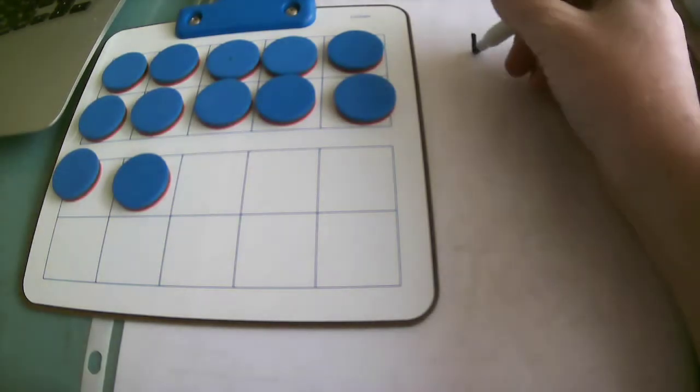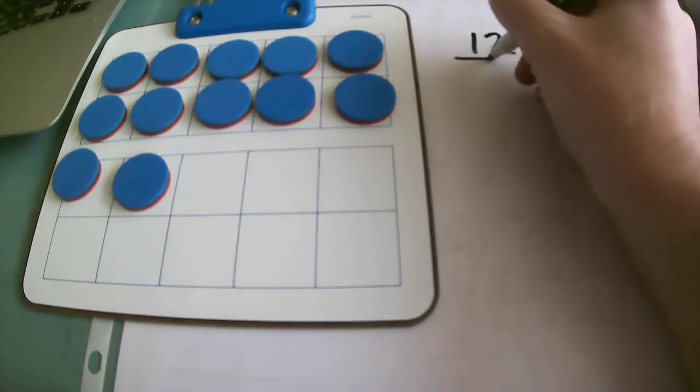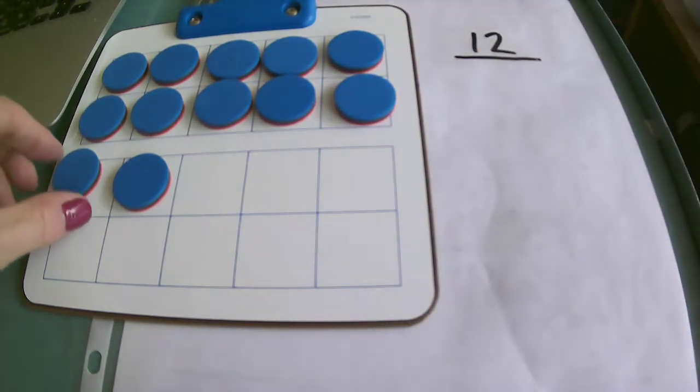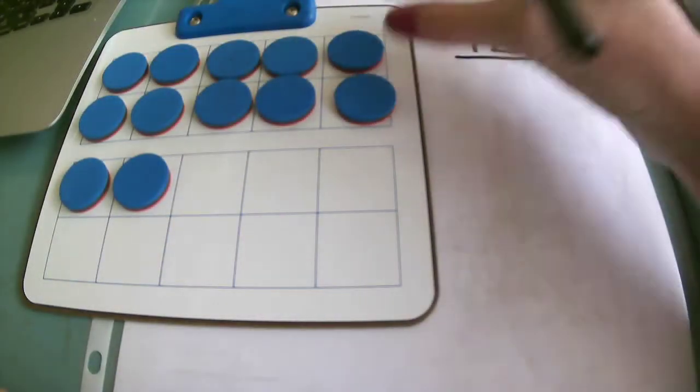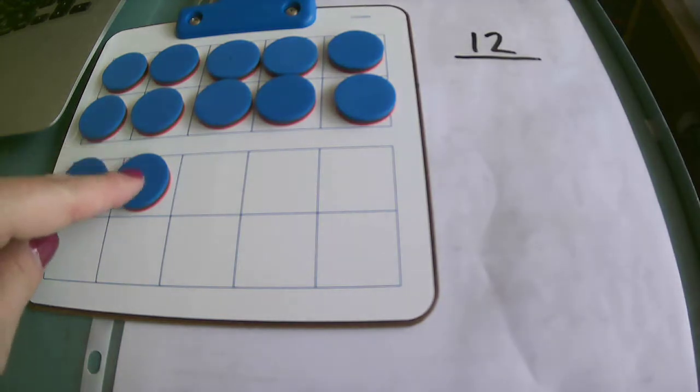So for our first number we're going to be working with the number 12, and you can already see here in my 10 frames I'm showing the number 12. I know it's 12 because I have one 10 frame filled up and then I have 11, 12, so I have a total of 12 blue dots.